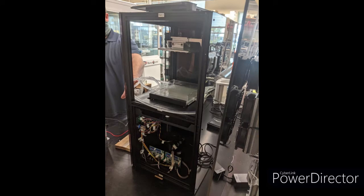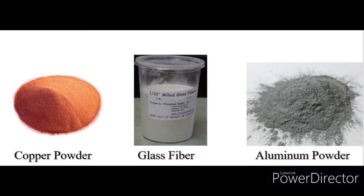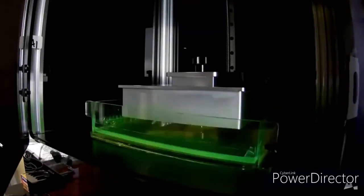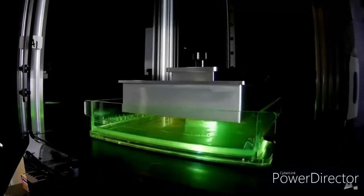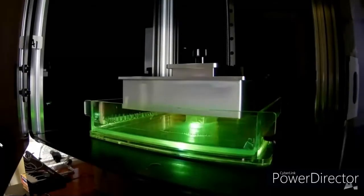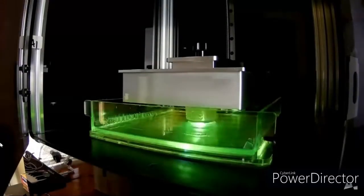One benefit to SLA printers is that you can easily add a filler, such as copper, glass fiber, or aluminum to the resin. The problem is that when adding fillers, they often sink to the bottom during printing, and this causes uneven distribution of the fillers in the printed part.